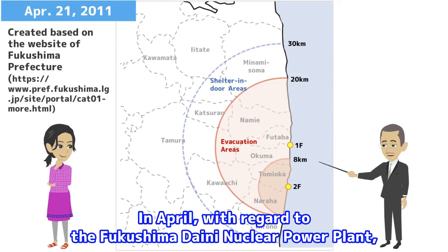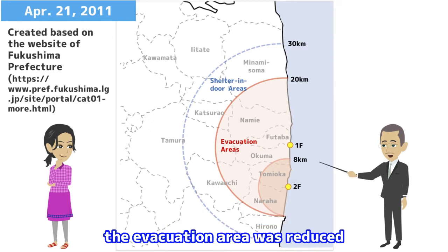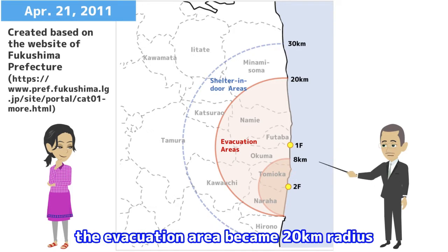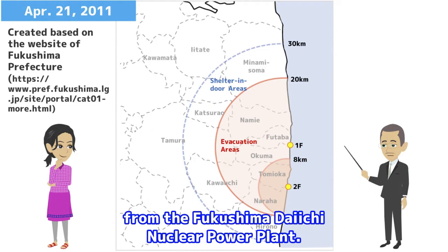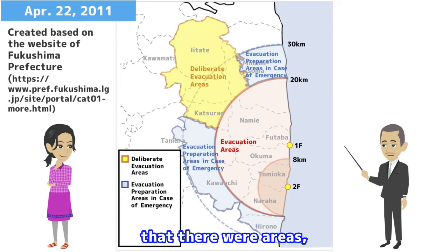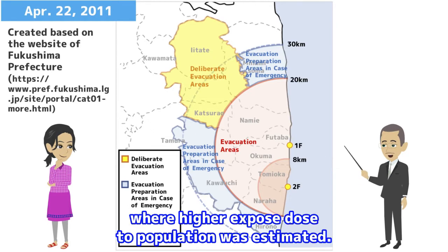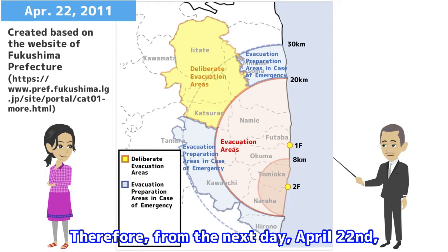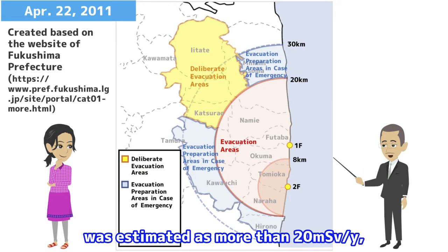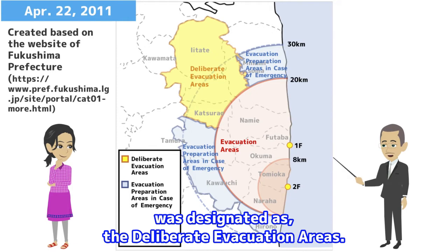In April, with regard to the Fukushima Daini Nuclear Power Plant, given the low possibility of reoccurrence of a severe incident, the evacuation area was reduced from 10 km radius to 8 km radius. In the wake of this decision, the evacuation area became 20 km radius from the Fukushima Daiichi Nuclear Power Plant. It also became apparent that there were areas even more than 20 km away from the Fukushima Daiichi Nuclear Power Plant where a higher exposed dose to the population was estimated. Therefore, from April 22, the area where the cumulative exposed dose was estimated as more than 20 mSv per year within one year after the accident was designated as the deliberate evacuation areas.